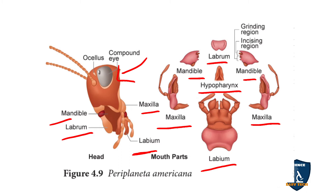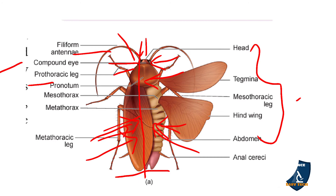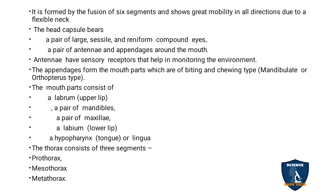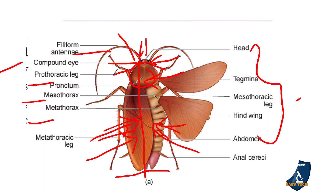Next is the thorax region, which is divided into three parts: prothorax, mesothorax, and metathorax. The prothorax is the largest part and connects the neck and the head — this connecting region is called the cervicum. Each thoracic segment bears a pair of walking legs.